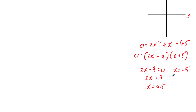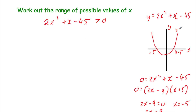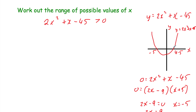The quadratic graph crosses the x-axis at minus 5 and 4.5. Here's our sketch of y equals 2x squared plus x minus 45. We want to find when this quadratic is greater than 0 — that is, when the graph is above the x-axis. Any value of x greater than 4.5 gives us a positive answer.